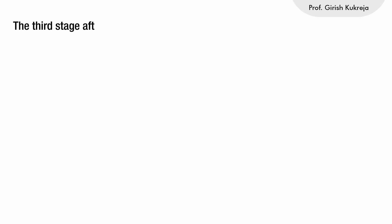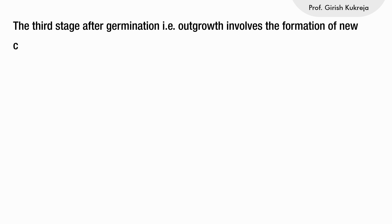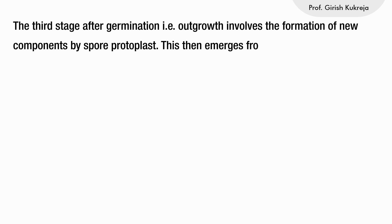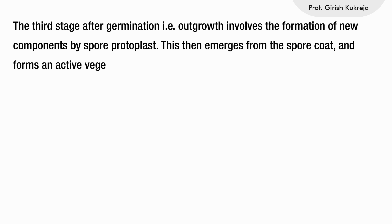The third stage after germination — outgrowth — involves the formation of new vegetative components by the spore protoplast. This then emerges from the spore coat and forms an active vegetative cell which grows by binary fission.